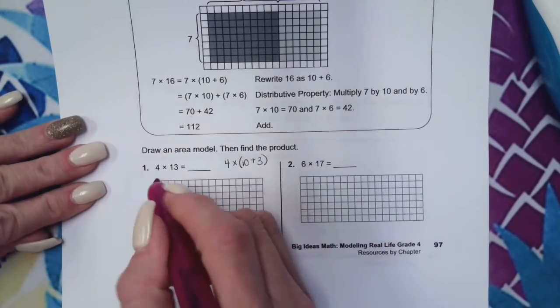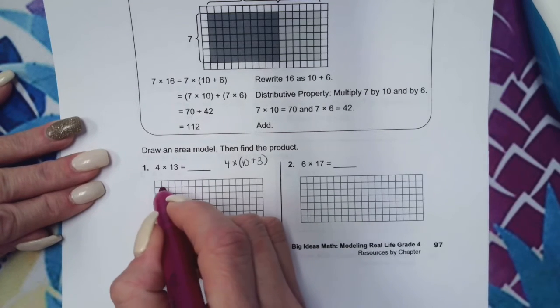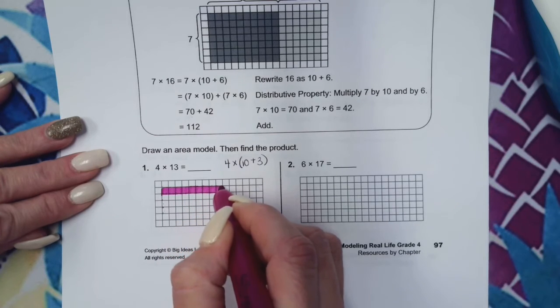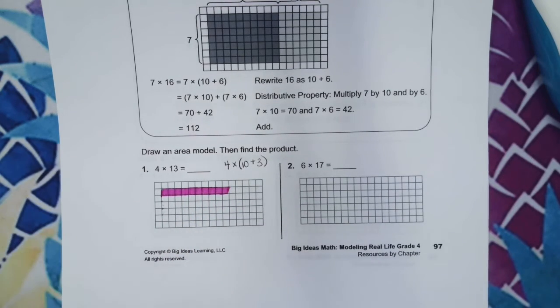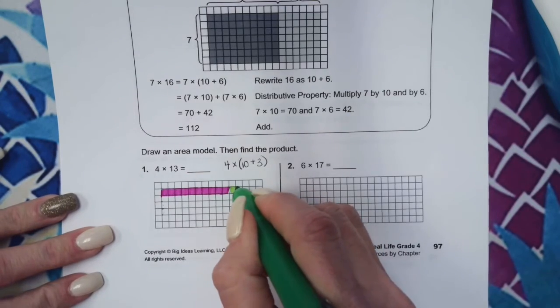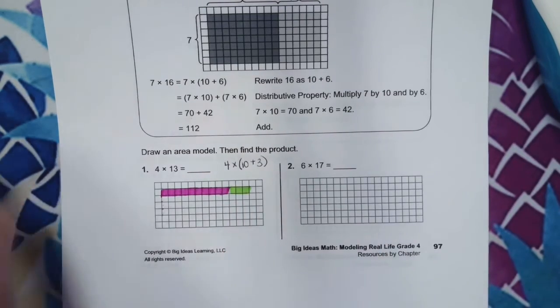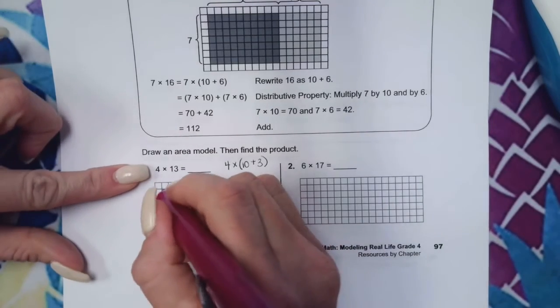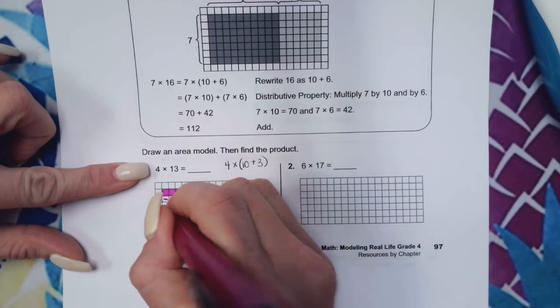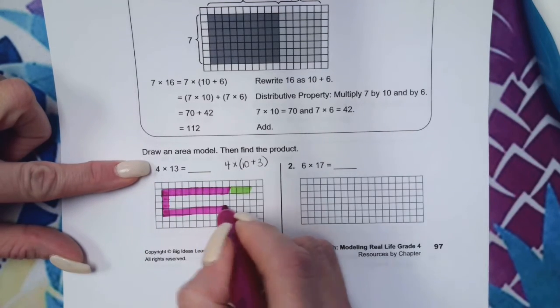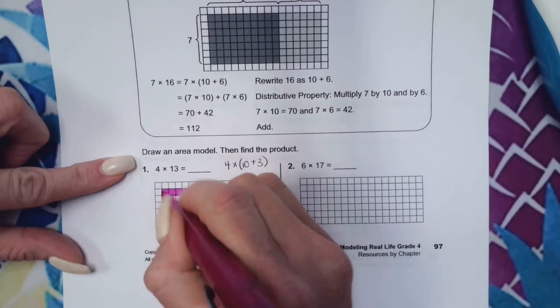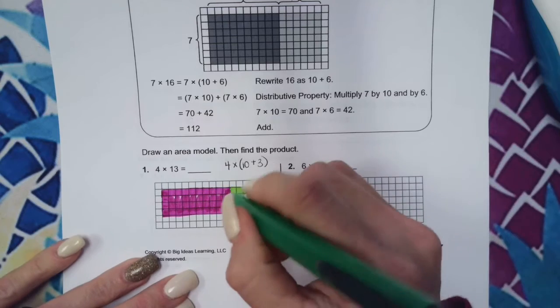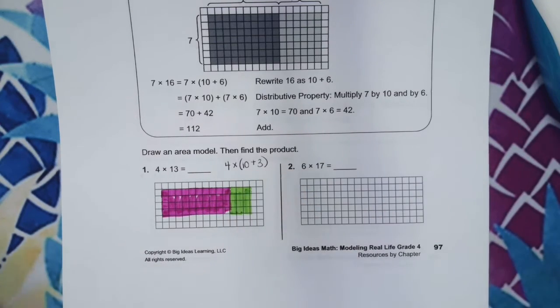So, 10 units long: 1, 2, 3, 4, 5, 6, 7, 8, 9, 10, and then 3 more units long. And how wide is this? 4, good. So I need to make sure I fill in all 4 of these all the way down. That's one area, and then the other area here.